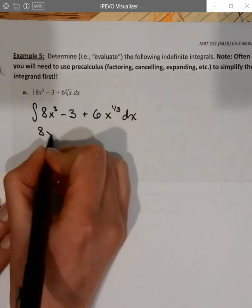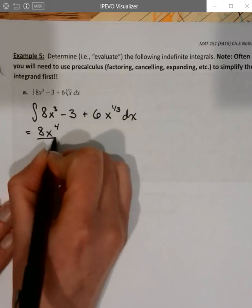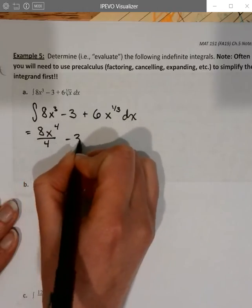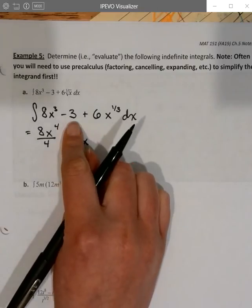Okay, so now we have our 8x to the, add 1 to the power, that's 4 now, and divide by 4, minus 3. There is a constant, so it's going to be 3 times x for its derivative constant rule, not constant multiple rule, that's the first one, the constant rule.